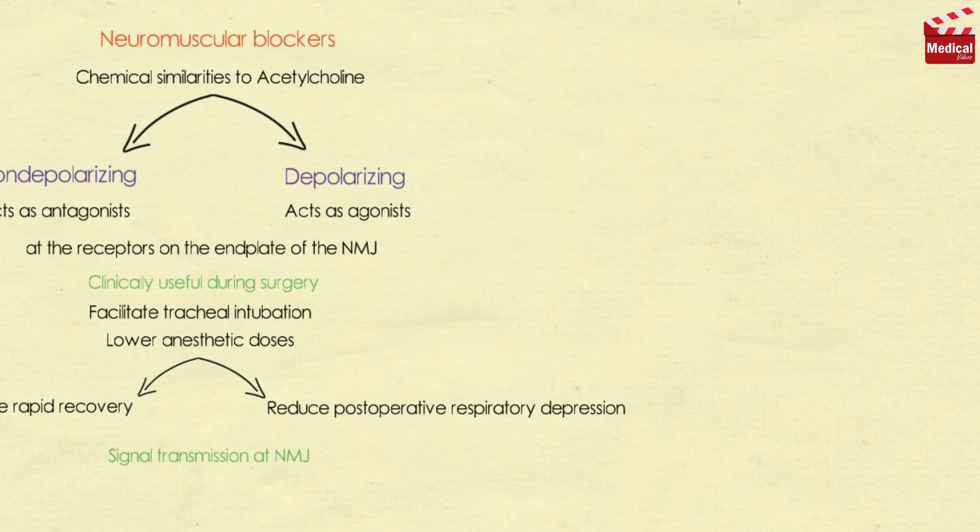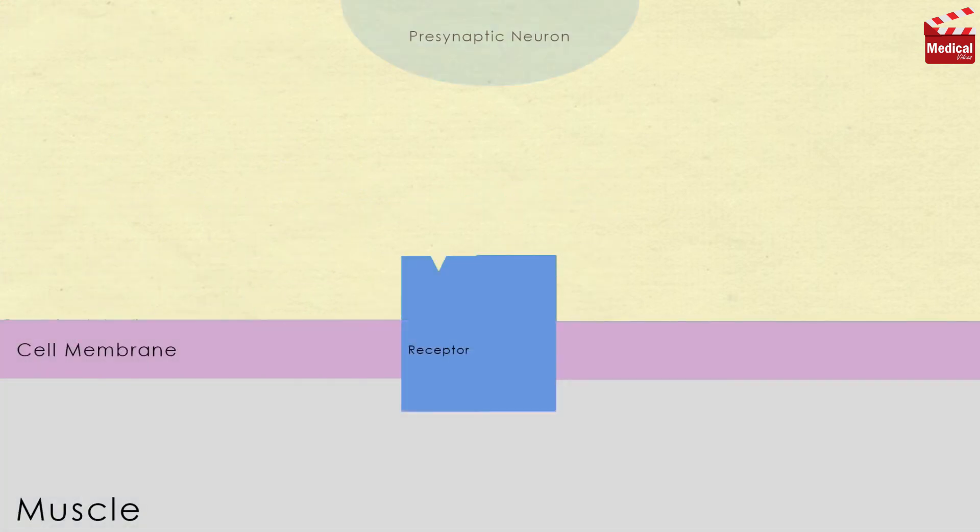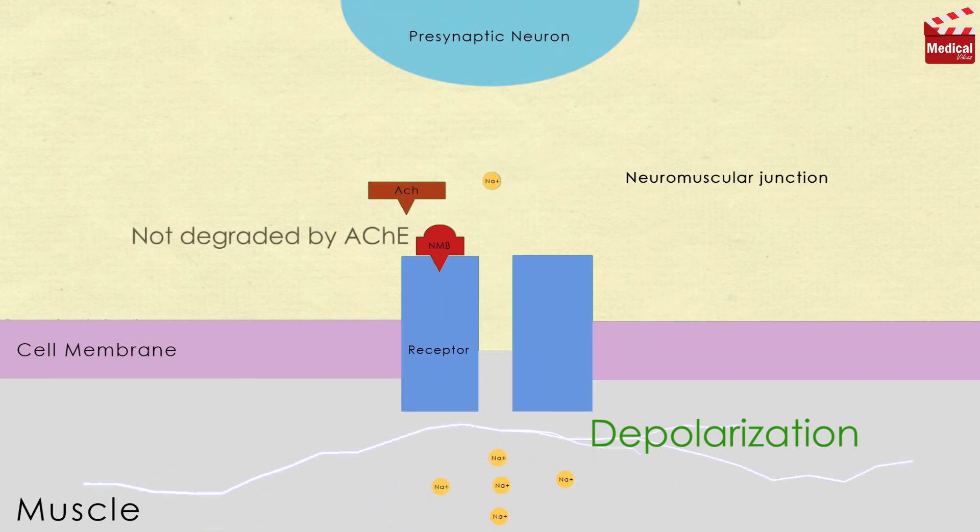Depolarizing blocking agents such as succinylcholine work by depolarizing the plasma membrane of the muscle fiber, similar to the action of acetylcholine. However, these agents are more resistant to degradation by acetylcholinesterase, so the depolarizing agent persists at high concentrations in the synaptic cleft, remaining attached to the receptor for a relatively longer time.